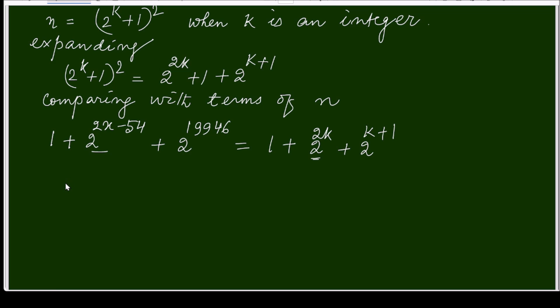Comparing this, I will get 2^(2k) equals 2^(2x-54). From this, 2k equals 2x - 54, or k equals x - 27. This is one relation between k and x.